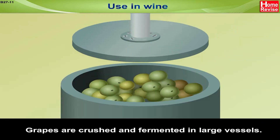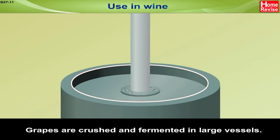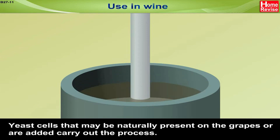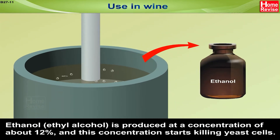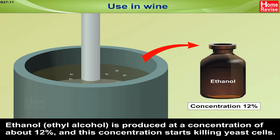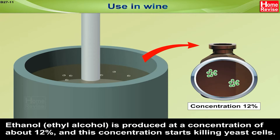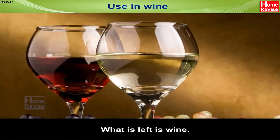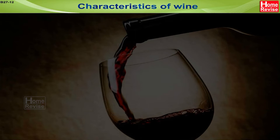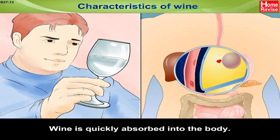Grapes are crushed and fermented in large vessels. Yeast cells that may be naturally present on the grapes, or are added, carry out the process. Ethanol (ethyl alcohol) is produced at a concentration of about 12%, and this concentration starts killing the yeast cells. What is left is wine.